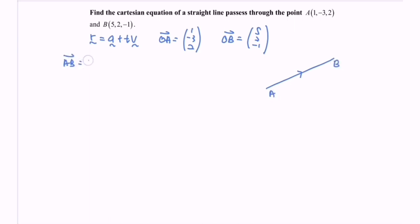So AB equals OB minus OA. So OB in here, we have 5, 2, negative 1. OA, we have 1, negative 3 and 2. So the vector AB equals 4, and then we have 5, and then we have negative 3. So that is the direction: 4, 5, negative 3.